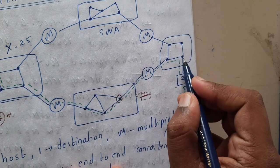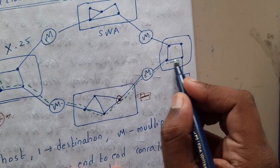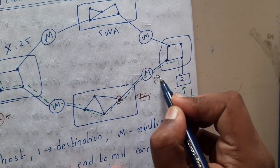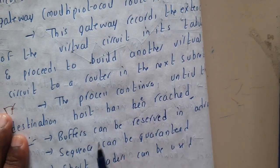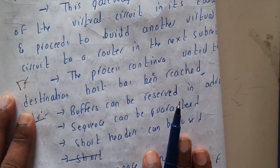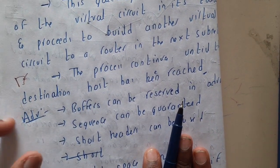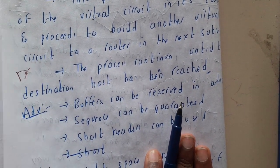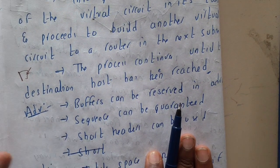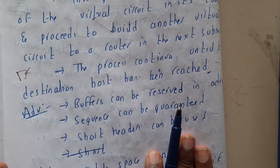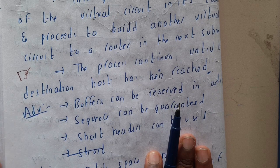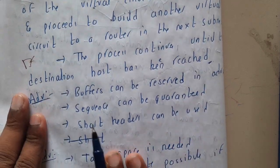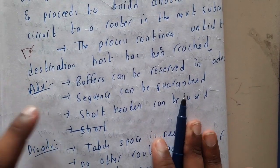The logic is: data is sent hop by hop — from node to node — with each node having a routing table indicating where to forward it. A major advantage is that buffers can be reserved in advance. A buffer of a defined size can be pre-allocated at the destination, so arriving packets are directly pushed into the buffer and can wait there.